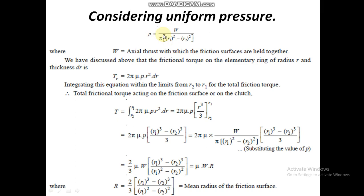For uniform pressure theory: pressure is load W divided by area π(R1² − R2²). The formula for torque is 2πμp·r²·dr, which we integrate from R2 to R1 to get the total torque transmitted. After integration, the result is T = (2/3)·μW·(R1³ − R2³)/(R1² − R2²), which can be written as T = μWR, where R = (2/3)(R1³ − R2³)/(R1² − R2²) is the mean radius of the friction surfaces.